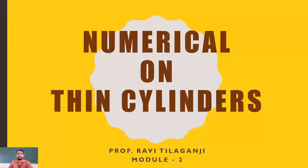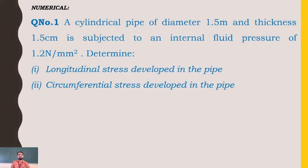Welcome to Strength of Materials. Today's video is related to numericals on thin cylinders. The first numerical: a cylindrical pipe of diameter 1.5 meters and thickness 1.5 centimeters is subjected to an internal fluid pressure of 1.2 Newton per mm square. Determine the longitudinal stress and circumferential stress developed in the pipe.